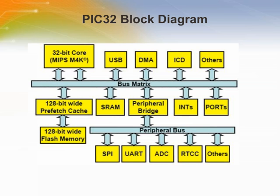The pre-fetch cache module can be programmed to look ahead and pre-fetch the next 128 bits of instructions and store them in an on-chip cache memory. This module is the reason why the PIC32 can continue to provide high performance even when the CPU is running faster than flash memory speed.